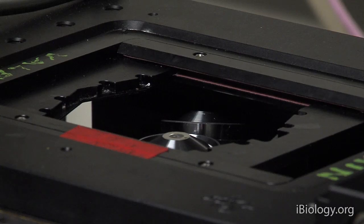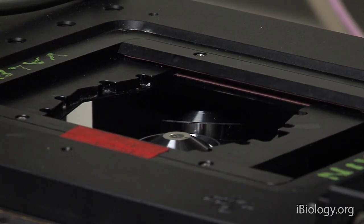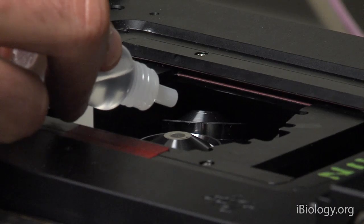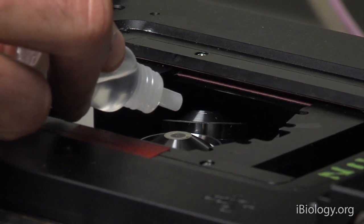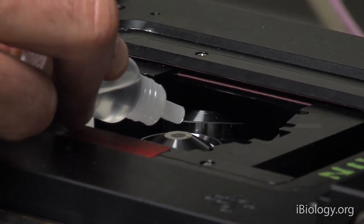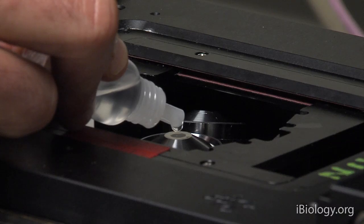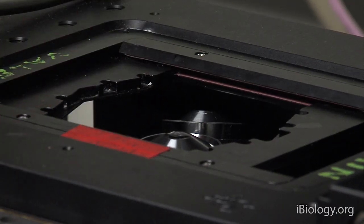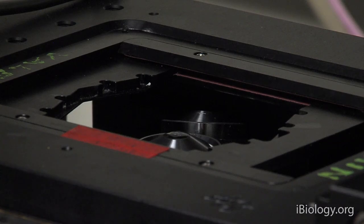So I have to place a drop of oil between the objective lens and the coverslip. One drop of oil should be enough. And I'm being careful not to touch the objective lens directly. There we go, we have our oil droplet.